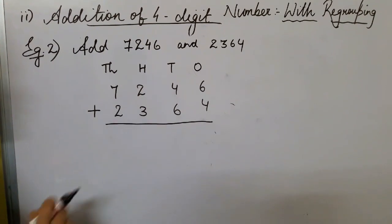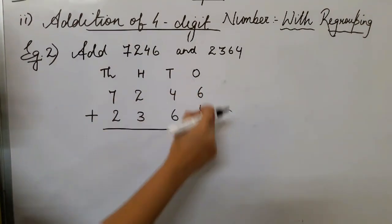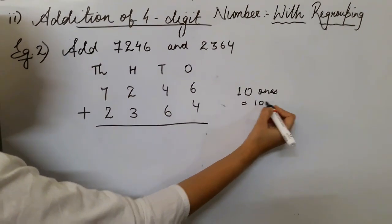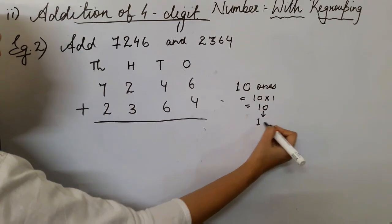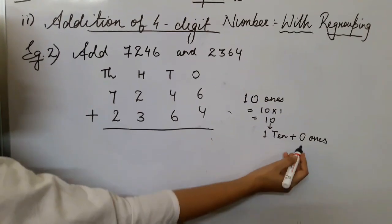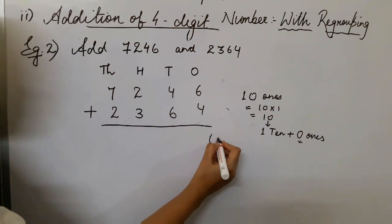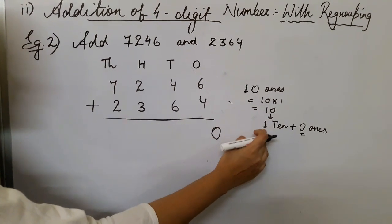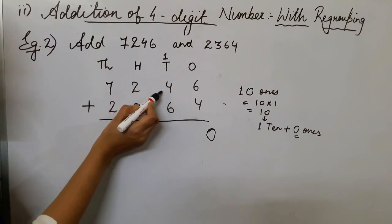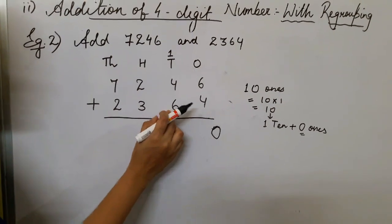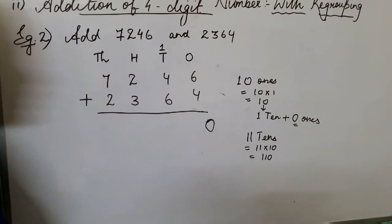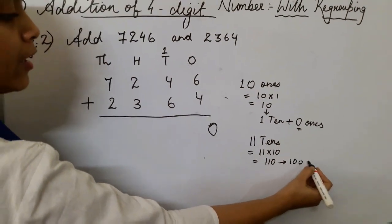After proper arrangement, add the ones: 6 ones plus 4 ones gives us 10 ones. Ten ones means one ten and zero ones. So we write 0 in the ones place and carry 1 ten to the tens place. Then: 1 ten (carried) plus 4 tens plus 6 tens gives us 11 tens.